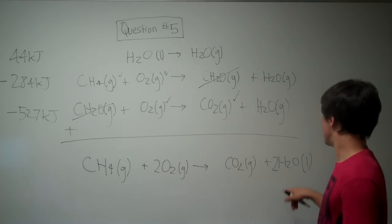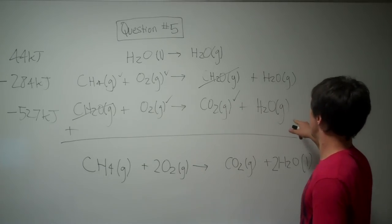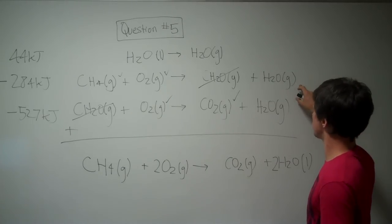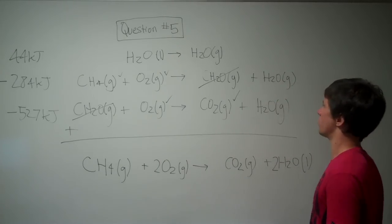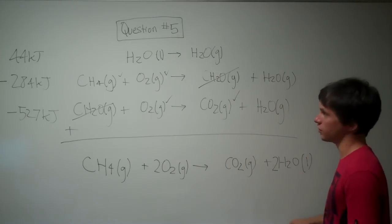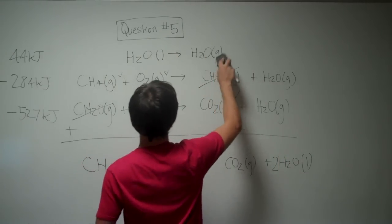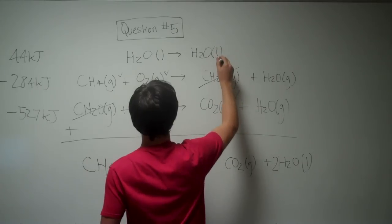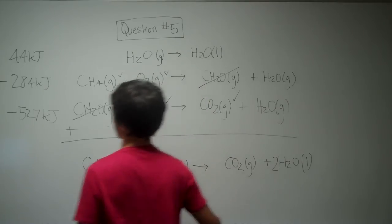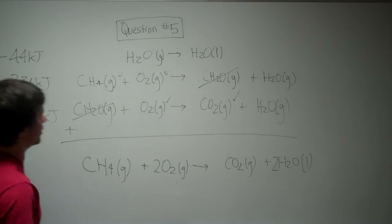Now, we need two liquid waters on this side. But we only have two... We actually have three gaseous waters. So, what we can do... And we need liquid water on this side. So, what we can also do is reverse this top equation. We'll make this side liquid and this side gaseous. So, note that this will get reversed. Now, it's negative as well.